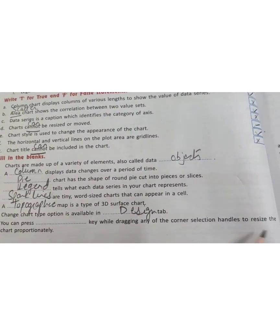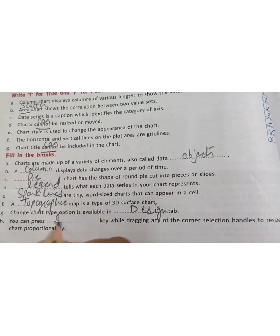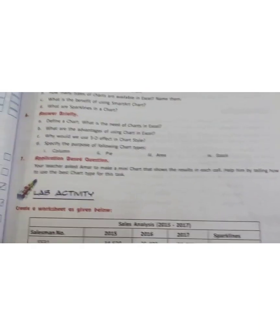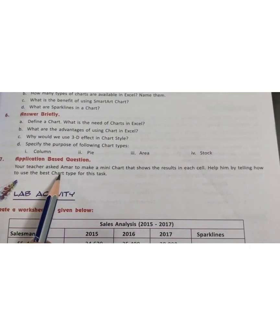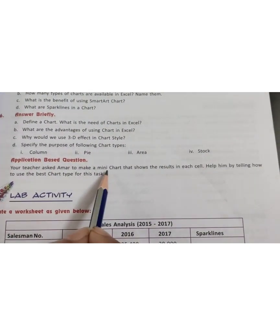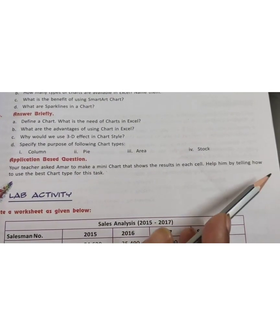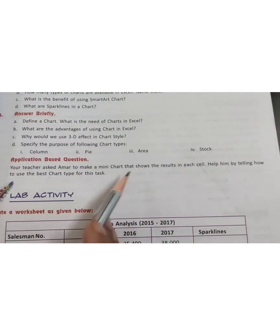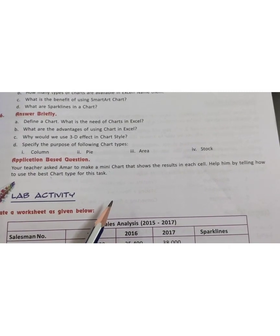Let's move to your seventh question, application based question. Your teacher asked Amar to make mini charts that show the result in each cell. Help him by telling how to use the best chart type for this task. So you can write sparkline charts is useful to create mini charts that show the result in each cell.